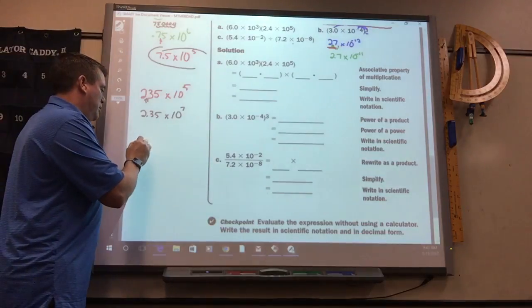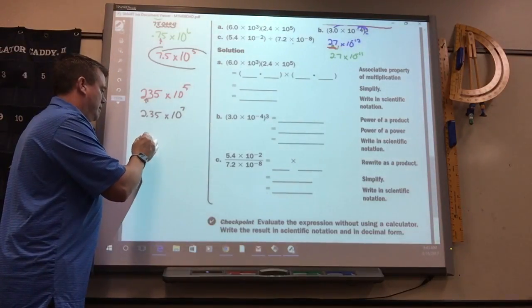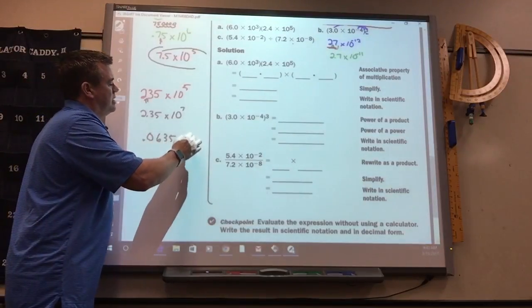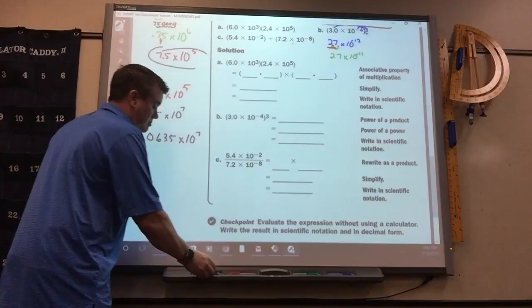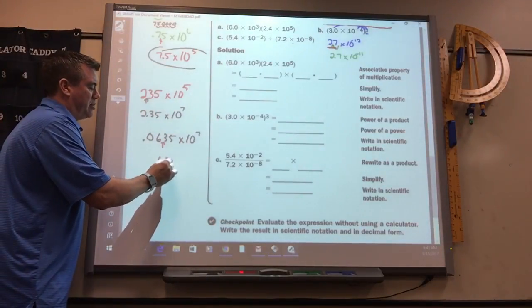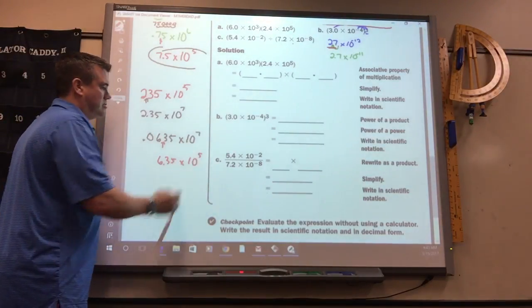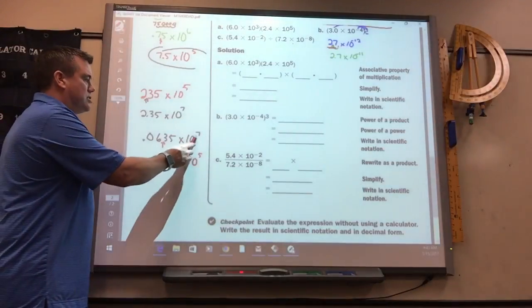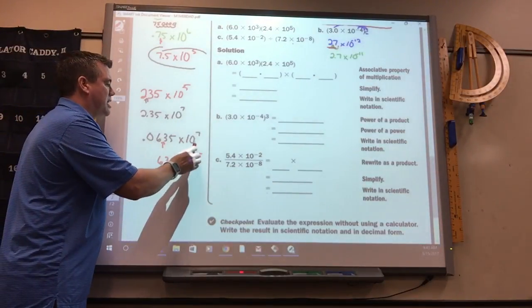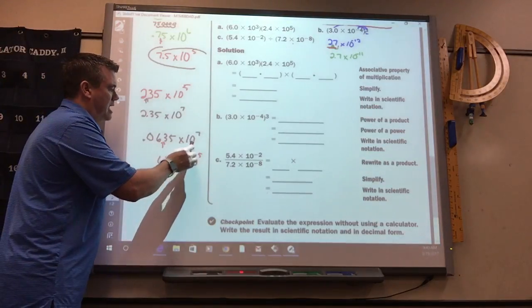Same thing on the decimals. If you had 0.0635 times 10 to the 7th, I'd have to put it there. It'd be 6.35 times 10 to the 5th. Because, this means move it 7 spots, 1, 2, 3, 4, 5, 6, 7. But, if the decimal is here, I'd only have to move it 5 spots.